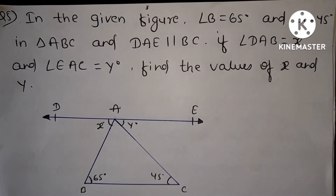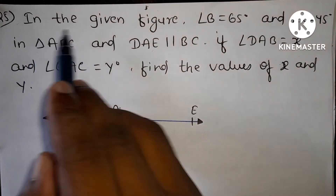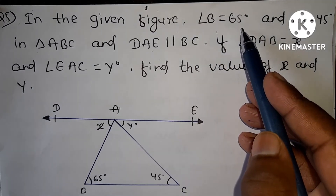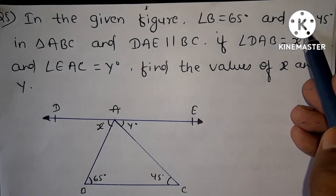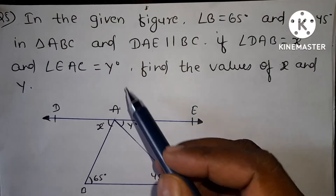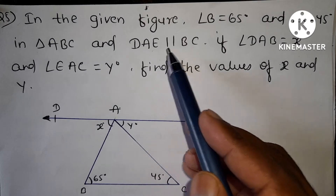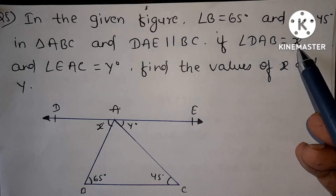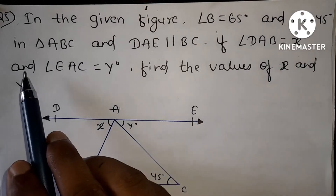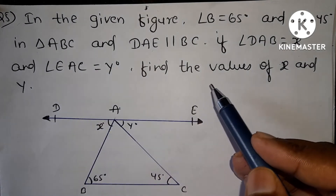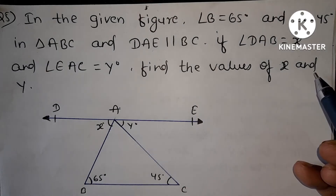Hi friends, we are going to solve this question. In the given figure, angle B equals 65 degrees and angle C equals 45 degrees in triangle ABC. DAE is parallel to BC. If angle DAB equals x degrees and angle EAC equals y degrees, find the value of x and y.